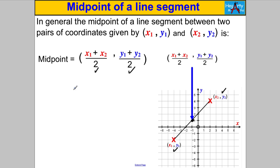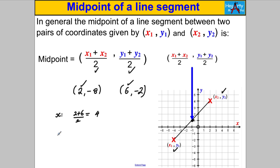Let me give you an example with harder numbers. What's the midpoint between (2, −8) and (6, −2)? To get the x-coordinate of the midpoint, add 2 and 6 and divide by two: that gives 8 ÷ 2 = 4. To get the y-coordinate, take −8 and add −2 and divide by two: that gives −10 ÷ 2 = −5. So the midpoint is (4, −5). That's how you do these midpoint questions.